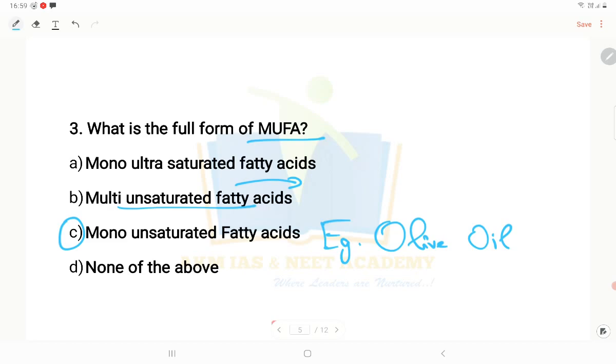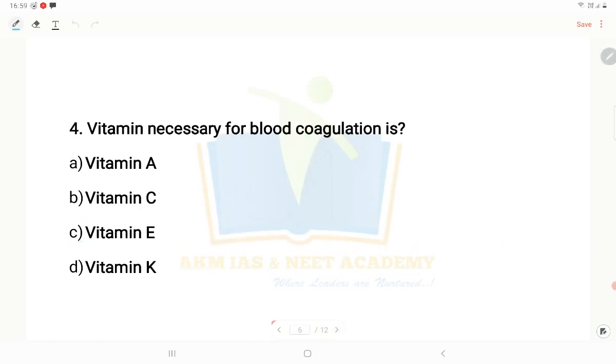Fourth question: Vitamin necessary for blood coagulation? You should definitely know - option D, vitamin K. Because vitamin K is essential for clotting, it helps in the formation of prothrombin.